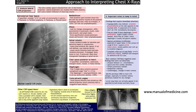Assess the neural foramina — if enlarged, a tumour or cyst is likely; if narrowed, bony enlargement is impinging on the spinal nerves. There should be a clear space posterior to the heart; if opacified, consider consolidation, atelectasis, enlarged vessels, masses, or hiatus hernias.